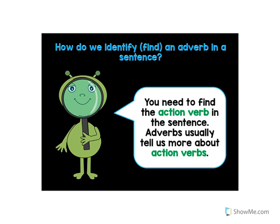You need to find the action verb in the sentence. Adverbs usually tell us more about action verbs, and they are usually next to or after the verb. So if you find the verb, you can easily find the adverb. For example, with the verb 'run,' you might say 'we run quickly' or 'we run slowly' — quickly or slowly would be the adverb, telling you how they ran.